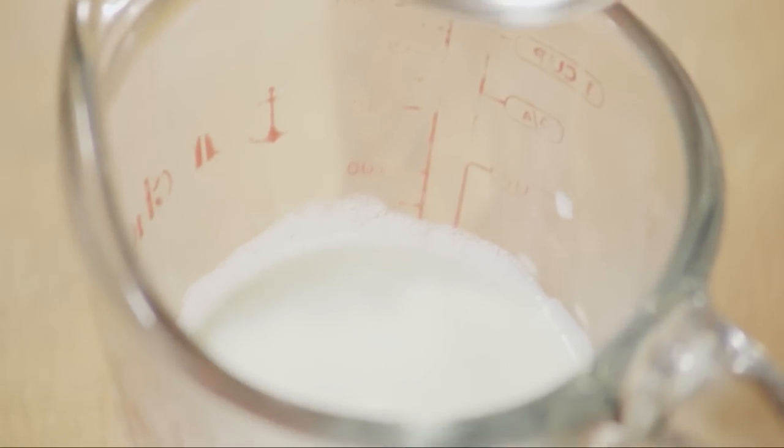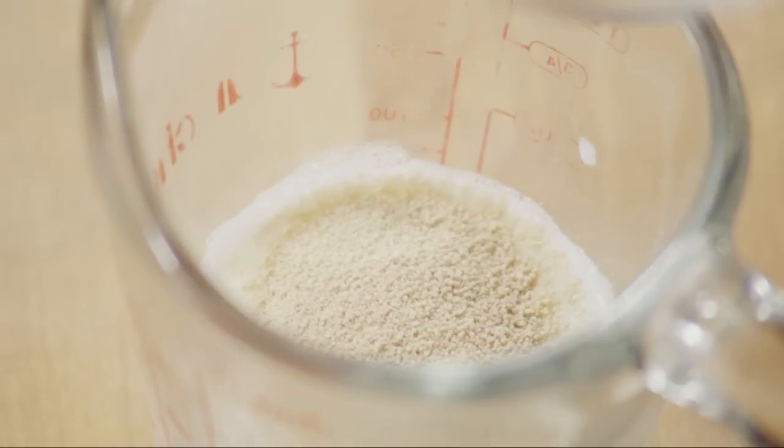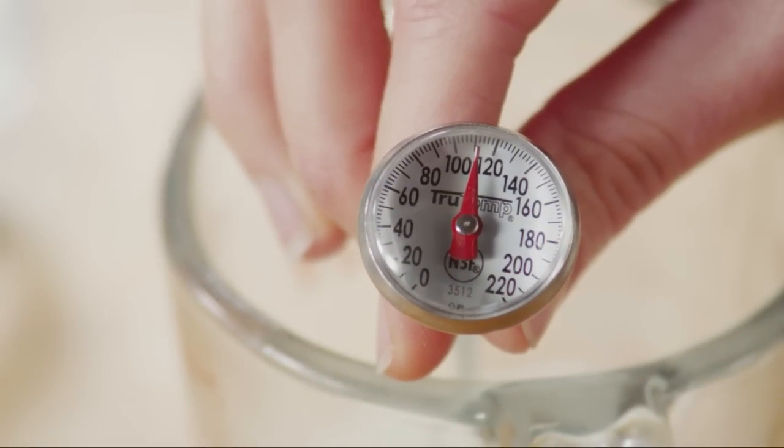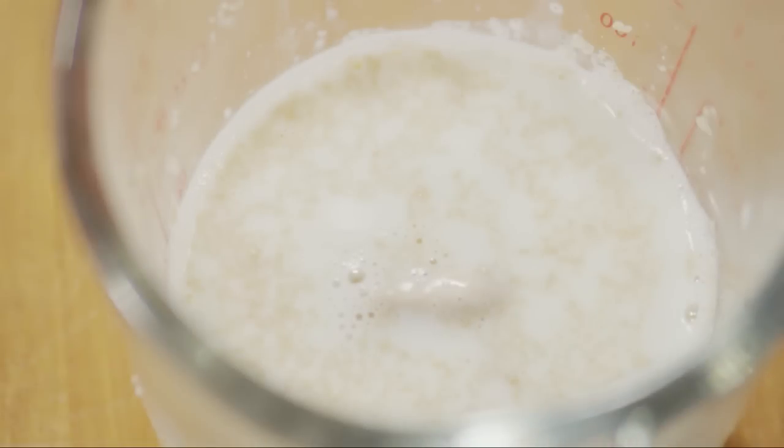Let's begin by activating the yeast. Add a quarter ounce of active dry yeast to a quarter cup of warm milk. It should be about 110 degrees. Let this sit until it starts to look creamy. It will take about 10 minutes.